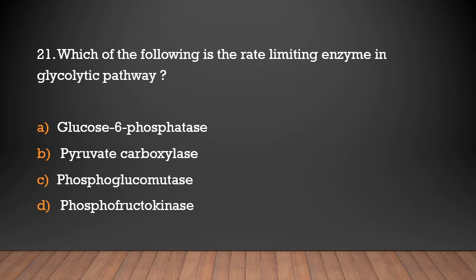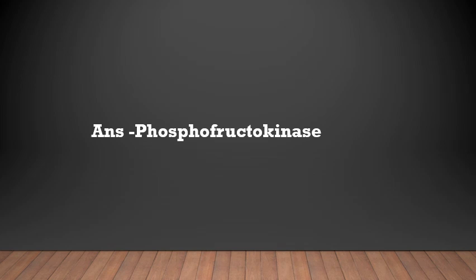Which of the following is the rate limiting enzyme in glycolysis? Options: Glucose 6-phosphatase, pyruvate carboxylase, phosphoglucomutase, phosphofructokinase. Answer: Phosphofructokinase — it is the most important rate limiting enzyme in glycolysis.